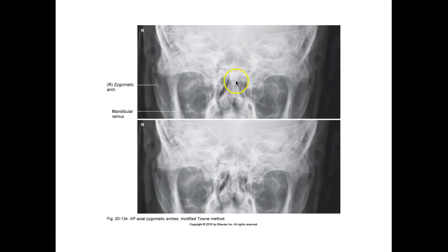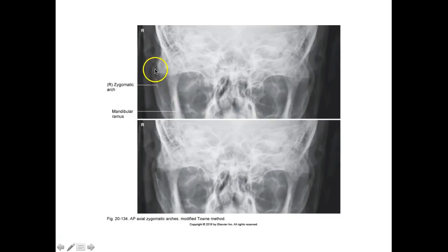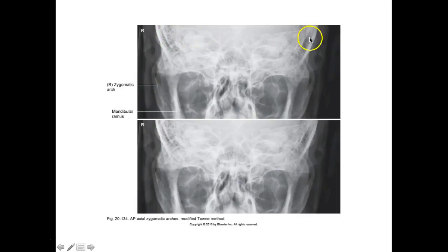The resulting image should show the zygomatic arches projecting laterally. The example shown is positioned too high — the patient needs to shift down so you can see the arches coming out and around clearly. The collimation also needs to be adjusted: clip off the top but make sure you see the arches fully. If you're not sure you can see the full zygomatic arch, that's a problem.